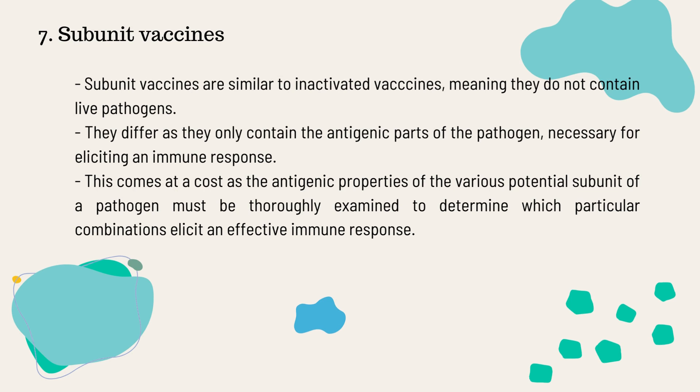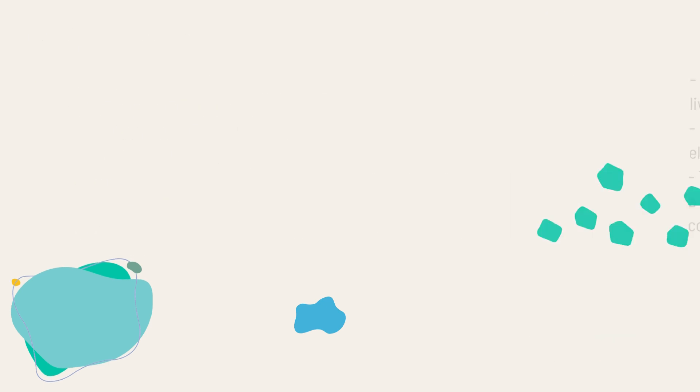The seventh type of vaccine is known as the subunit vaccine. Subunit vaccines are similar to inactivated vaccines in that they do not contain live pathogens. They differ in that only the antigenic parts of the pathogen remain in the vaccine. This comes at a cost, as there needs to be proper screening and examination to determine which particular combinations elicit an effective immune response.